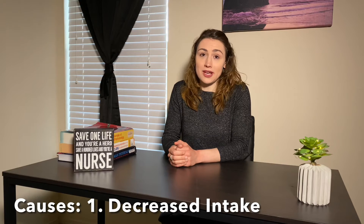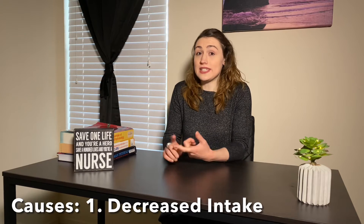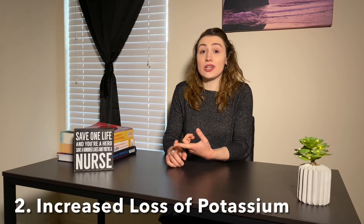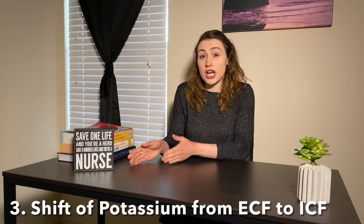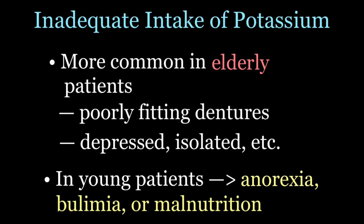The causes of hypokalemia can be broken down into decreased intake of potassium, increased loss of potassium, and a shift of potassium from the extracellular to the intracellular space. Inadequate intake of potassium is pretty rare. It occurs more commonly in elderly patients because of poor eating habits — maybe poorly fitting dentures, depression, or isolation. If it occurs in young people, it's usually the result of malnutrition, anorexia, or bulimia.